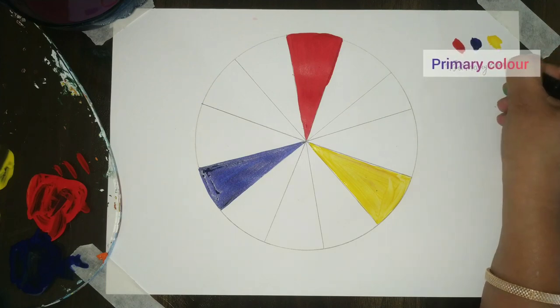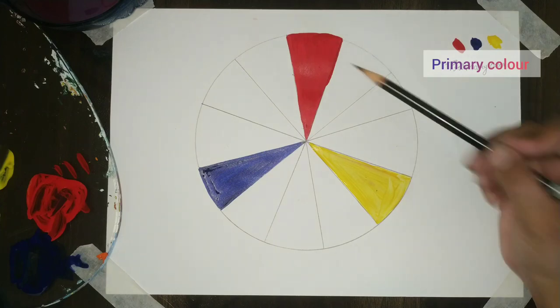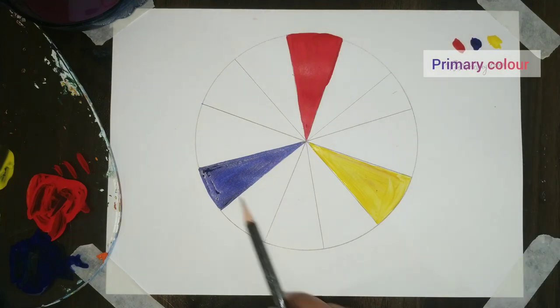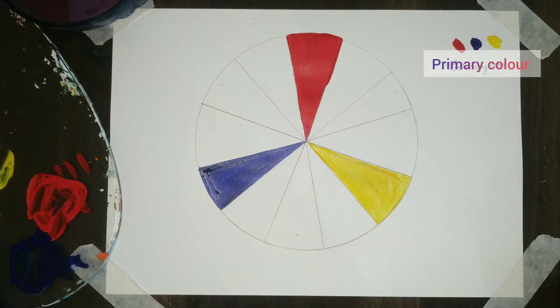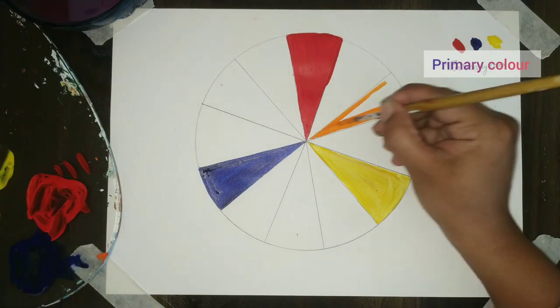Starting with the secondary colors, we are adding two colors here. Firstly, we will add red and yellow. It will be orange. Yellow and blue it will be green. And blue and red it will be violet. Starting with yellow and red, I am adding an orange here.